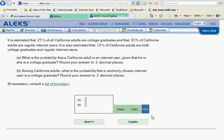It is estimated that 25% of all California adults are college graduates and that 30% of California adults are regular internet users. It is also estimated that 19% of California adults are both college graduates and internet users.